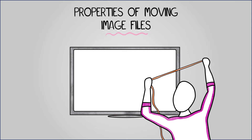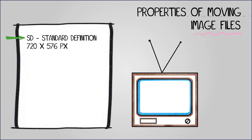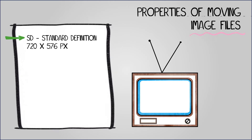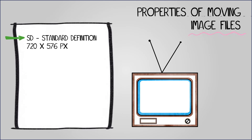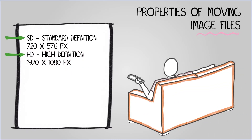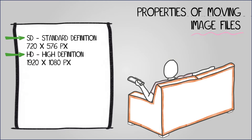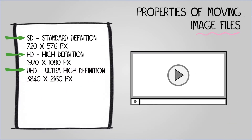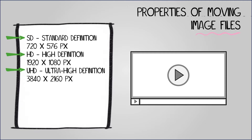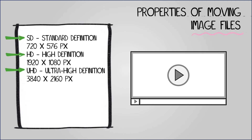Let's look at five of the most common resolutions. Standard definition is an older resolution used in videotapes and box televisions, featuring pixel dimensions of 720 by 576 pixels. High definition, introduced in 1998, is commonly found in broadcast TV in most households and has 1920 by 1080 pixels. Ultra high definition was launched in 2012 and is offered by many streaming services, boasting a resolution of 3840 by 2160 pixels.